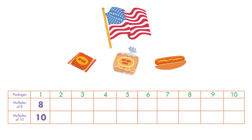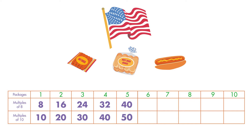The first 5 multiples of 8 are 8, 16, 24, 32, and 40. The first 5 multiples of 10 are 10, 20, 30, 40, and 50. The least common multiple is the smallest number that is a multiple in both rows. Here, it is 40.